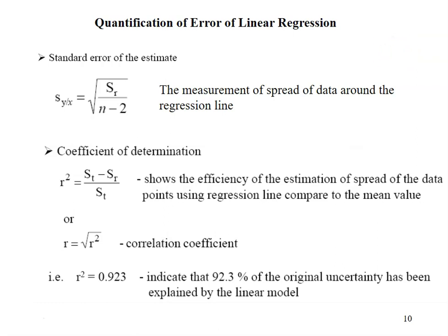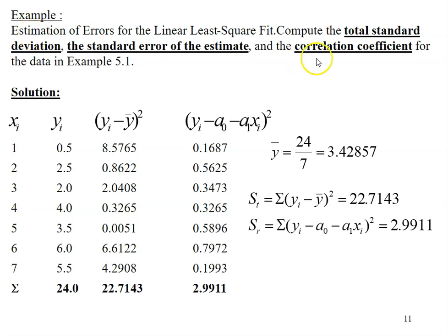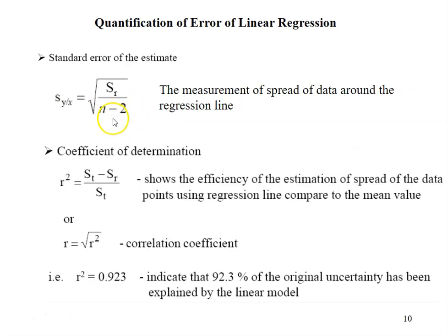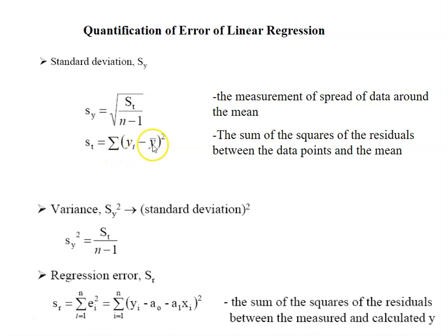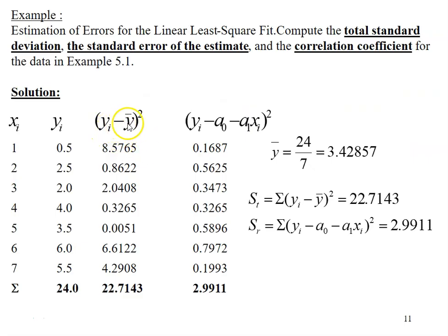Here is an example: the question asks you to estimate errors for the linear least squares fit by computing three things — the total standard deviation sy, the standard error of the estimate syx, and the correlation coefficient. Using the same data, you need to calculate st and sr. According to the formula, st is the summation of (yi minus the mean).